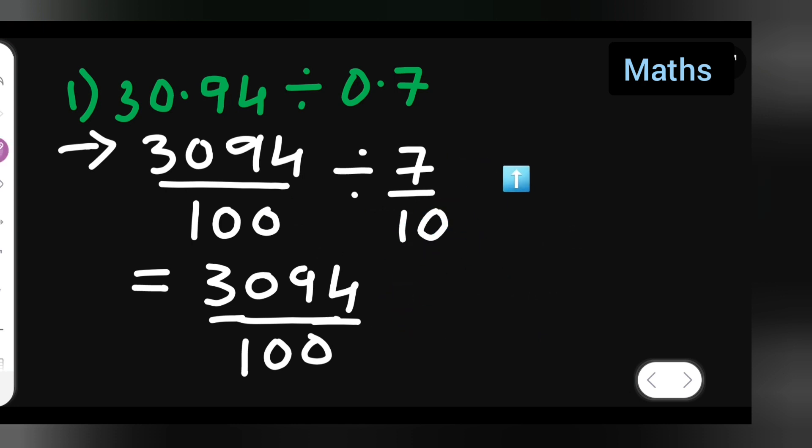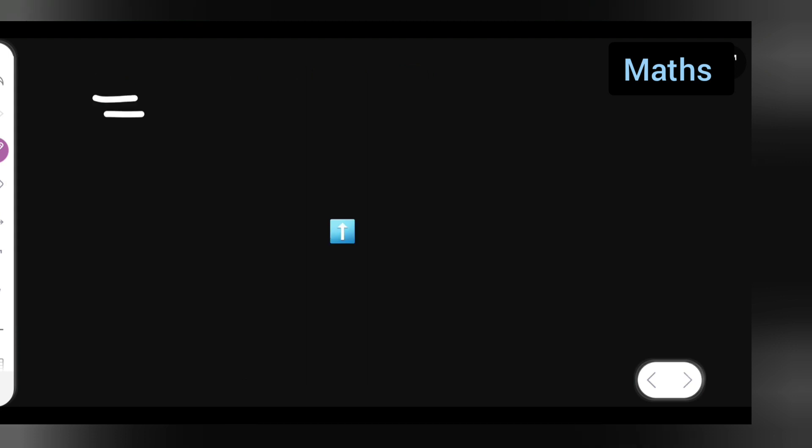Now cancel the zeros in 100 and 10. After canceling, write this on the next page: 3094 upon 10 multiplied by 1 upon 7. Let's see what we get after canceling.